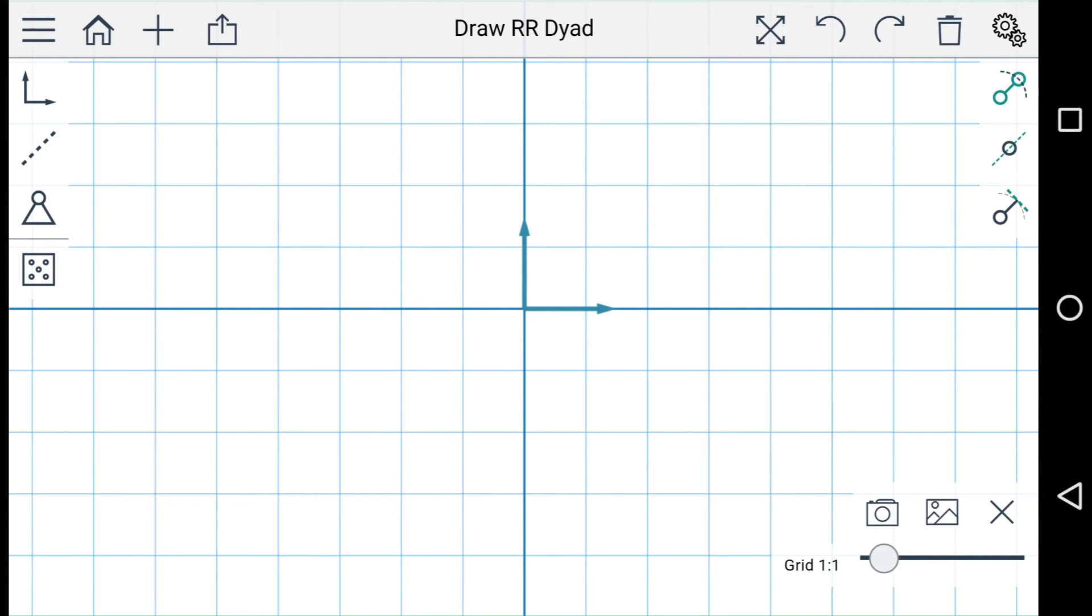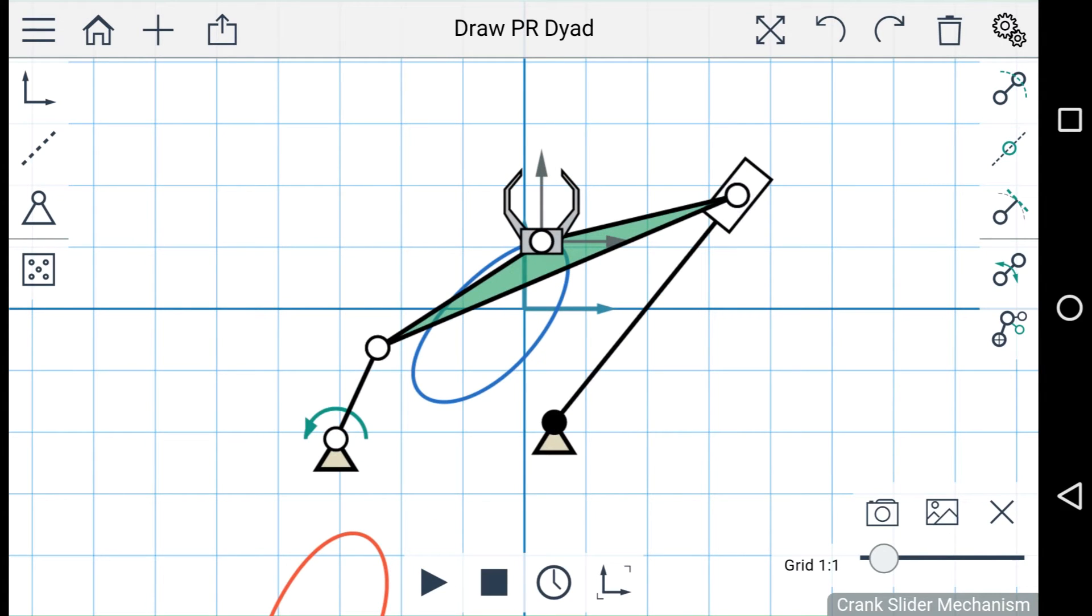Or using an RR dyad and a PR dyad, you can create a crank slider.